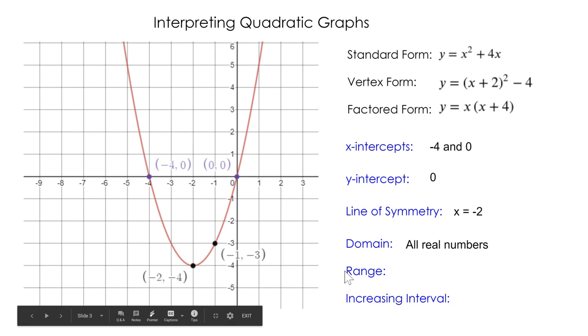Range, remember think about a mountain range, so something that is vertical and high. Range is our y values. There is a limit to our y values. Our y values start at negative 4 and increase. Our parabola has no y values below negative 4, but it does include negative 4, so our range is y is greater or equal to negative 4.